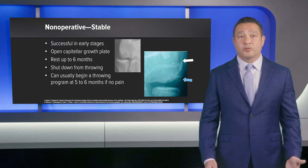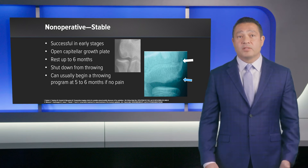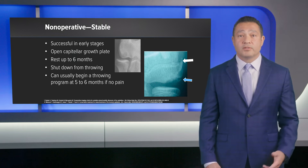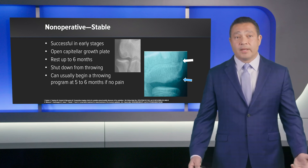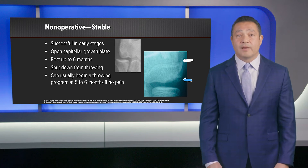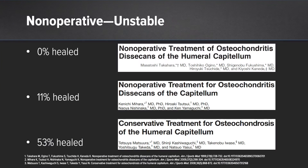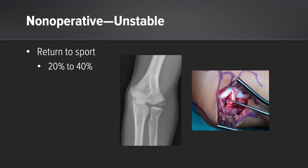Non-operative treatment can be very successful in early stages with stable lesions — patients who have an open capitellar growth plate. Resting them for up to six months usually takes care of the problem. You have to shut them down from throwing and any axial loading on the elbow to help with healing. If they're pain-free, they can start a throwing program at about five to six months after the initial diagnosis. Non-operative treatment in unstable lesions has been shown to do very poorly, with low healing rates and very low return to sport rates.